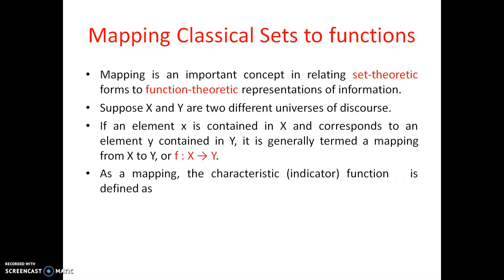This mapping is characterized by the characteristic function, defined as χ_A(x). This is defined such that if x is an element belonging to capital A, then χ_A(x) will be one, and if x doesn't belong to capital A, then it will be zero. Let us show the same thing in a graphical manner.